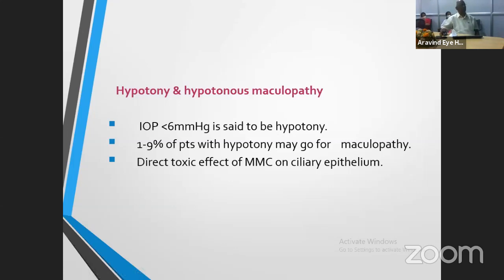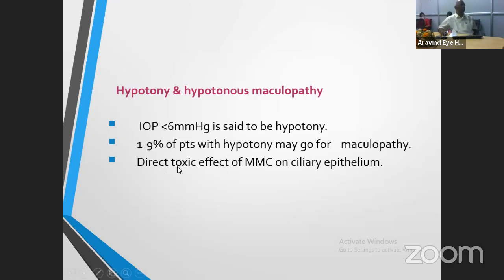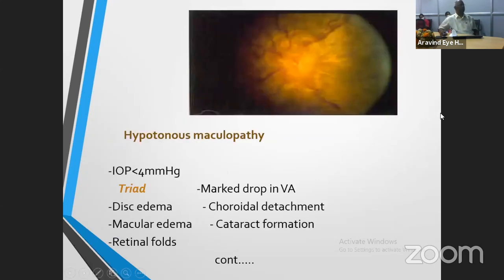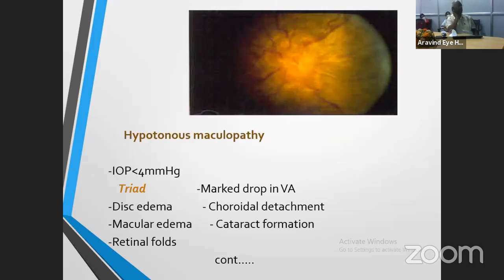You should know about hypotony and hypotony maculopathy. Anything with intraocular pressure less than 6 mmHg is said to be hypotony. Usually 1 to 9% of patients with hypotony go for maculopathy — not all cases of hypotony will develop maculopathy. It is a direct toxic effect of mitomycin on the ciliary epithelium. Those at risk for hypotony maculopathy are younger individuals, high myopes, and pigmentary glaucoma patients. Also, any condition where the sclera is thin is a risk factor for hypotonous maculopathy.